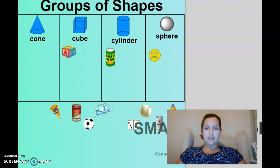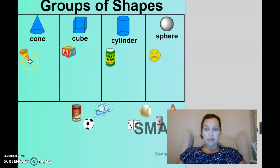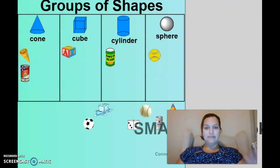Here we go. Yeah. That's a what? A cone. Very good. It's got the pointy top and the circle on the bottom.